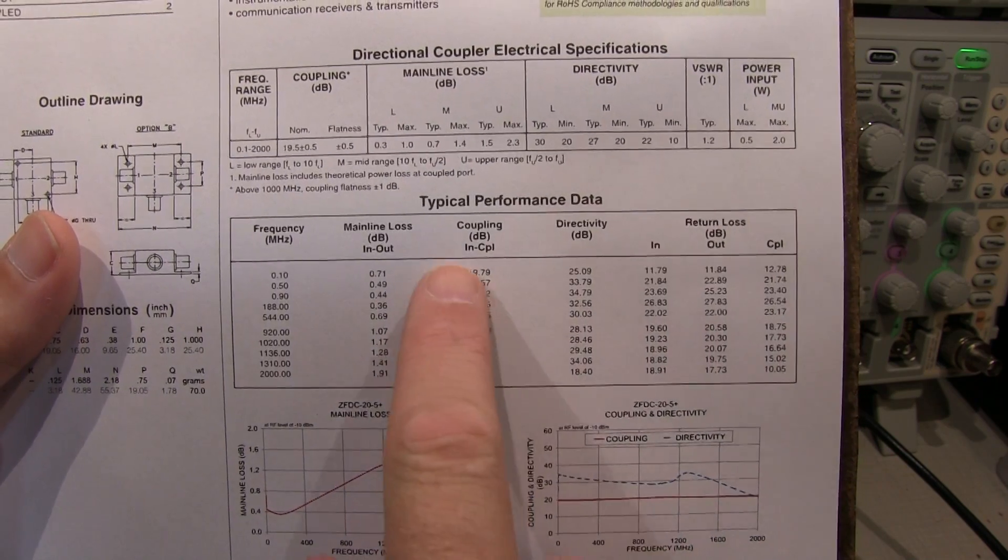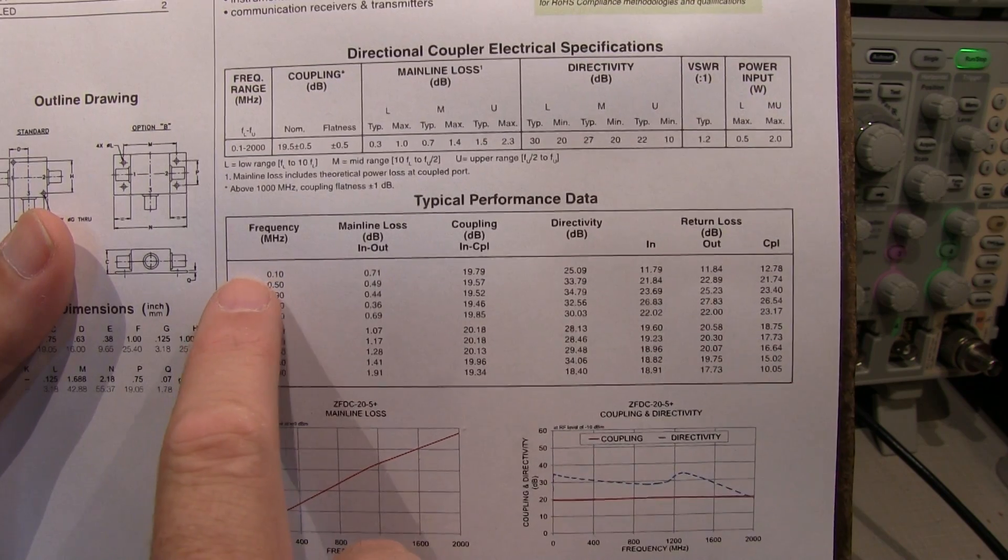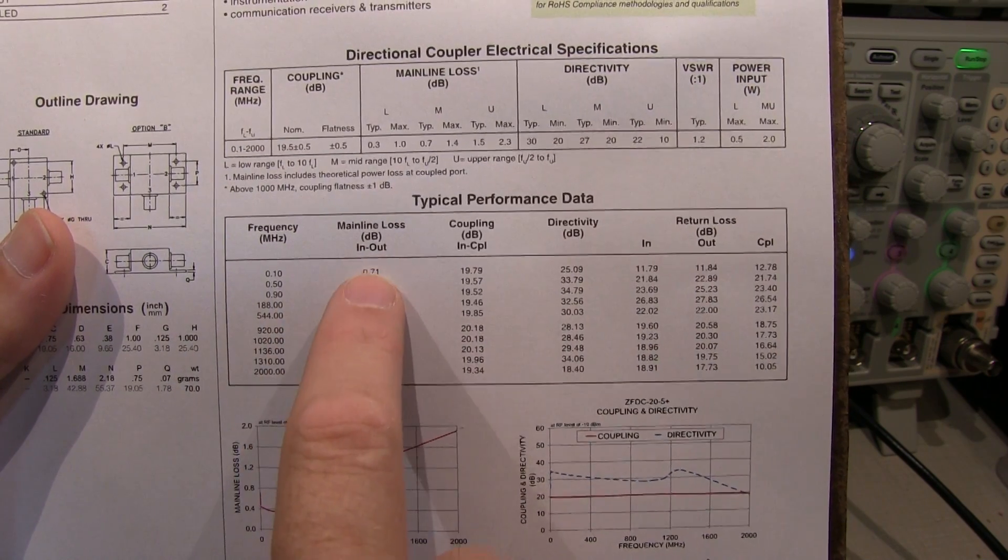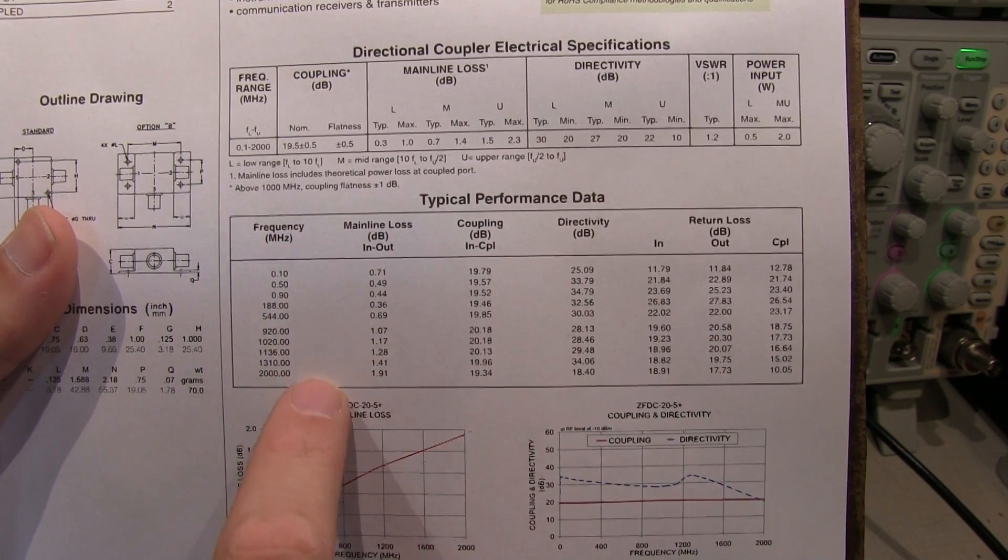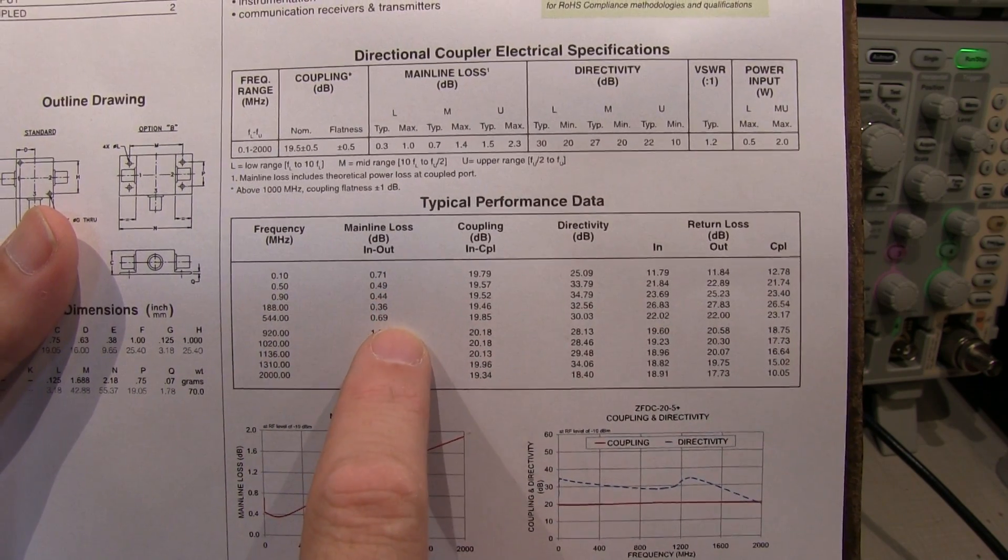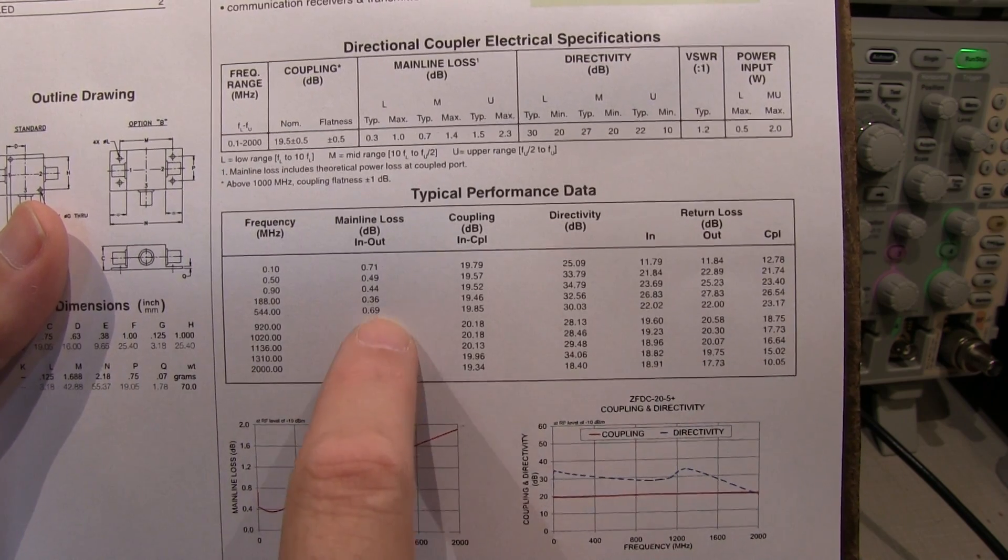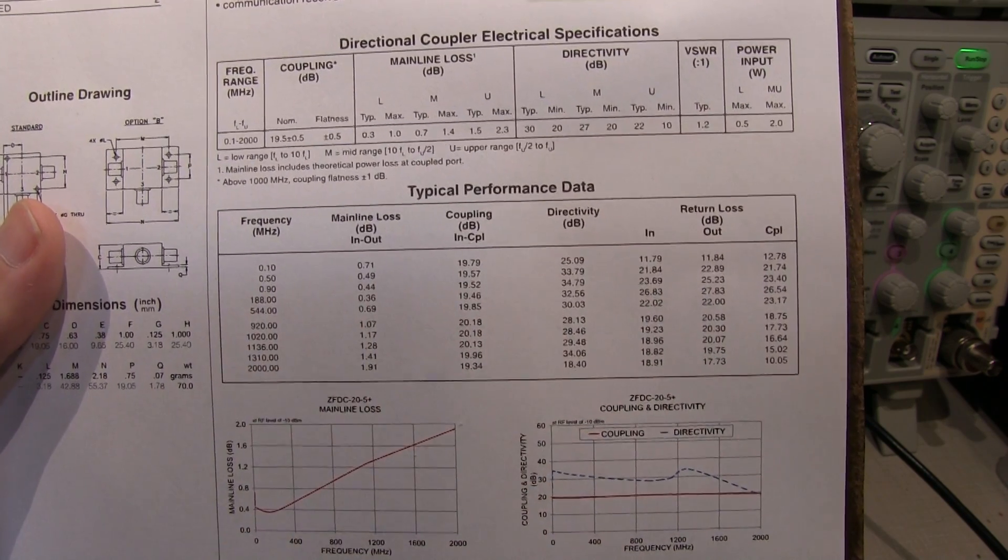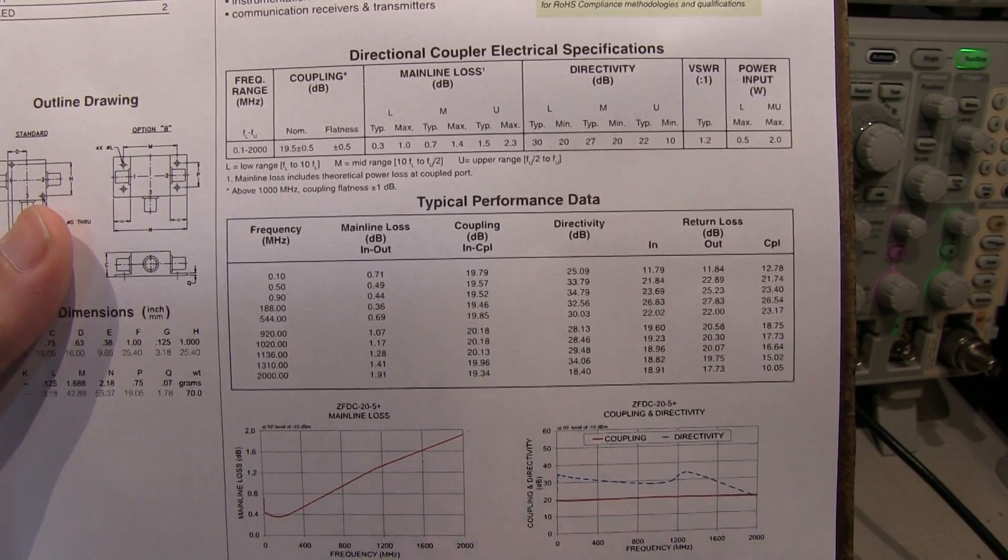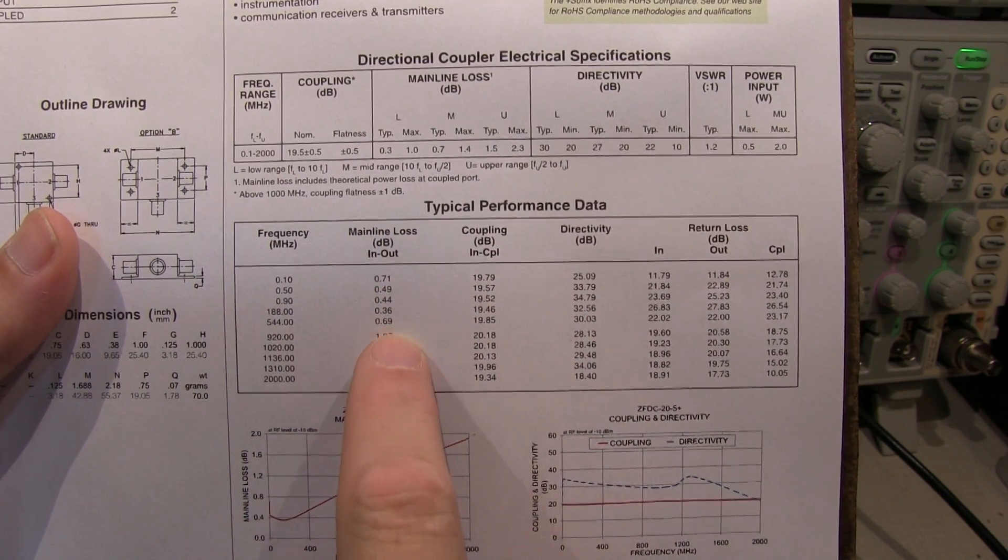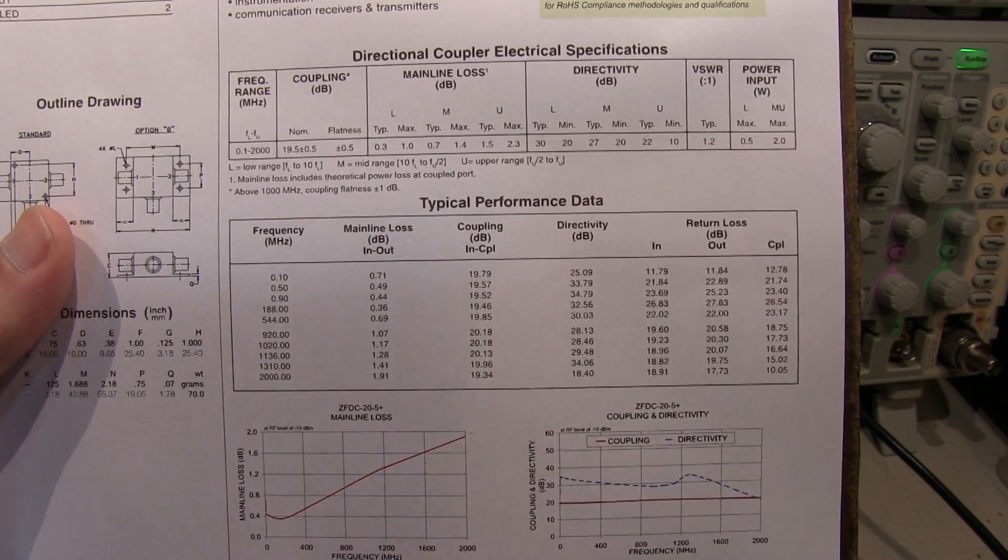One of the prominent specs is the main line loss, and this is how much power is lost from the input to the output. And here's some typical data for this device over its operating frequency range. And we can see it's typically a dB or less. It goes up a little bit closer to 2 dB at 2 gigahertz, but it's under a dB down at the lower frequencies. So all that means is that we're going to have essentially very little loss in that forward direction or anywhere along the main line from input to output.